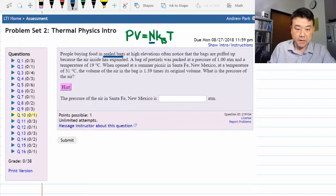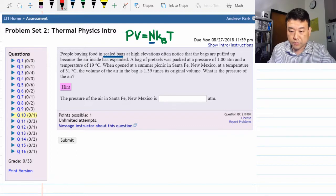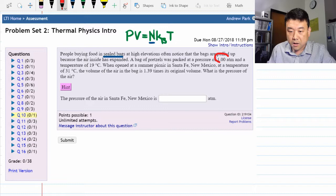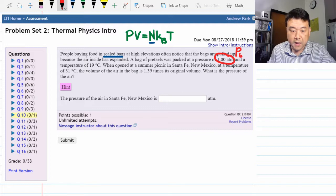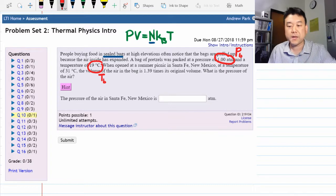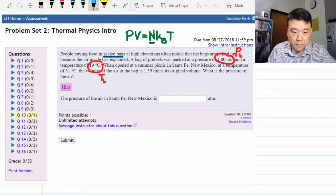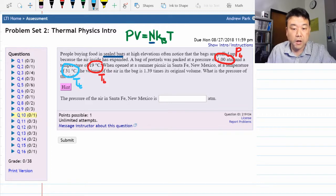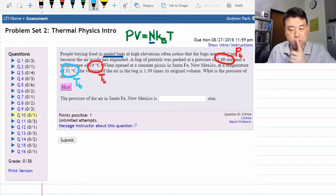Now the problem gives you a set of informations. It gives you pressure at the bottom where it's packed. Let me assign a letter to it, Pb. And the temperature of 19 degrees C. Let me assign that another letter, temperature at the bottom. And it says when opened at a summer picnic place in some place at a temperature, 31 degrees C. Let me give that another letter. This is the temperature, let's say at the top.